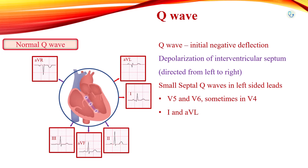Q-waves may be normal variants in one or more of leads II, III, and AVF. Small Q-waves with less than 40 ms duration and less than 0.5 mV amplitude are considered normal in most leads.